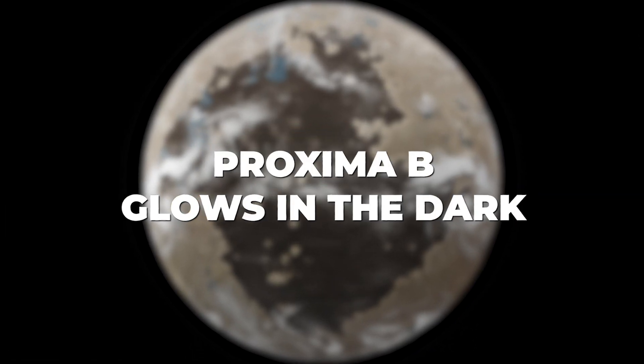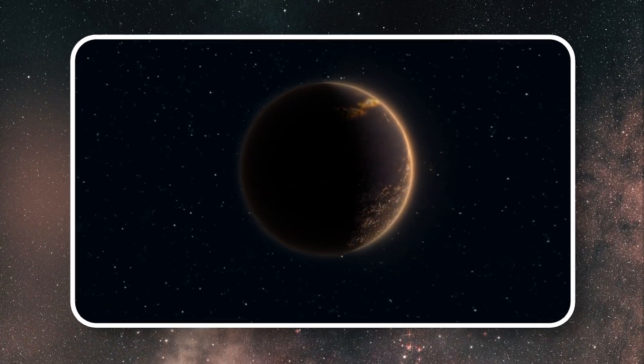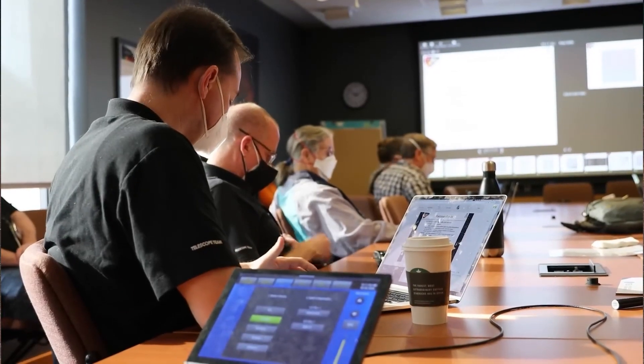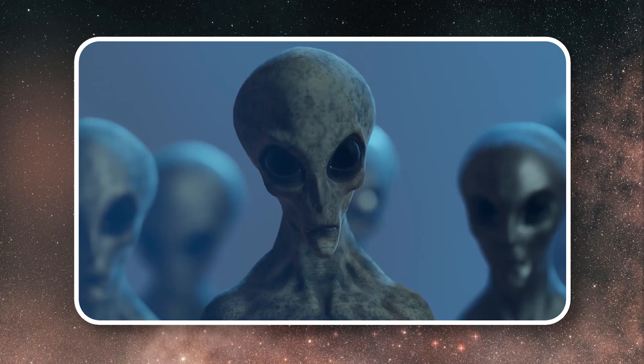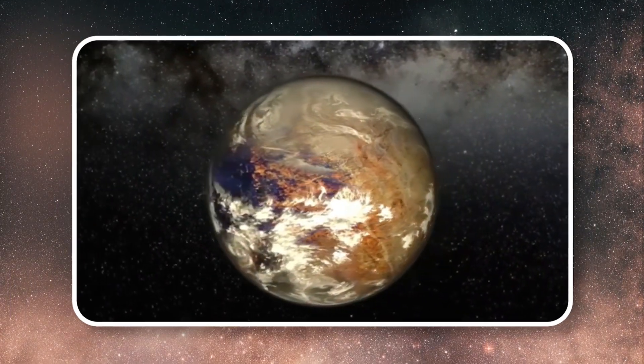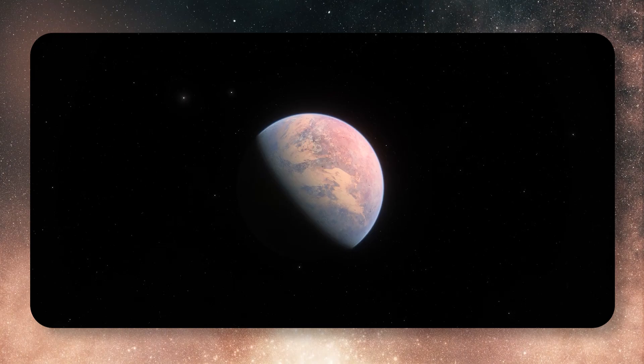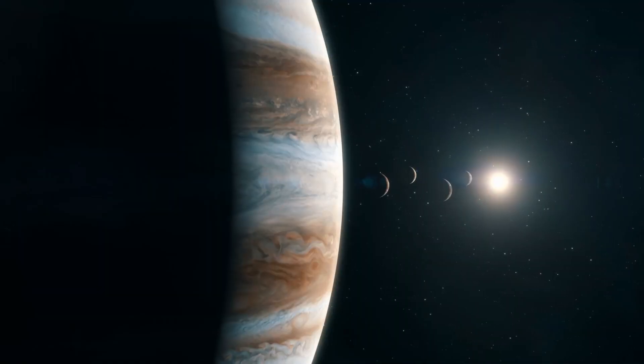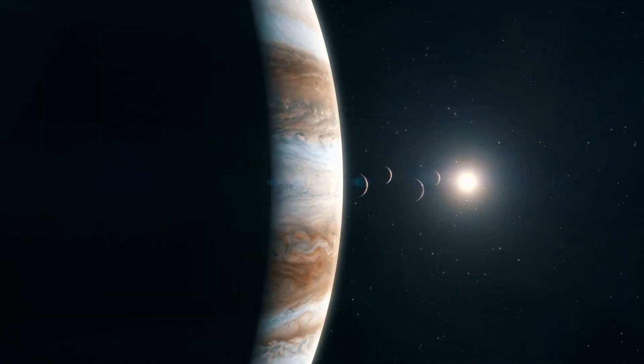Are we seeing signs of another civilization, one just four light years away? Let us dive deeper into these incredible revelations. Proxima B glows in the dark. Proxima B is a lot like Earth in some key ways. The scientific community is buzzing. David Kipping, an astronomer from Columbia University, called Proxima B's light signature complex.